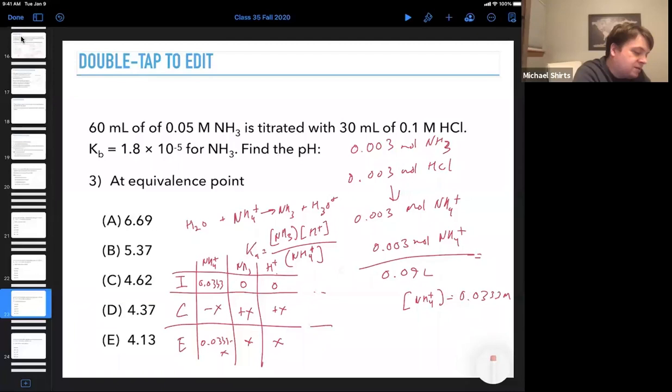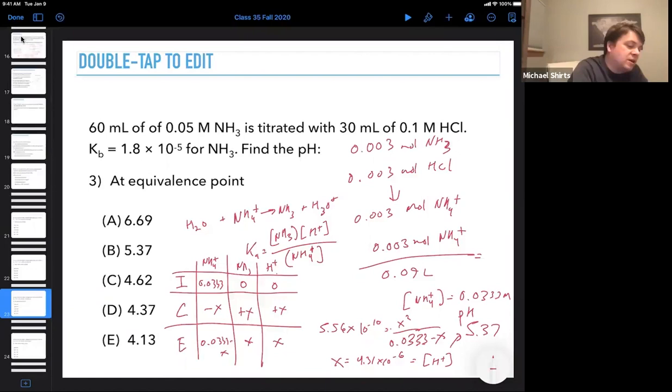Plugging everything in, 5.56 × 10⁻¹⁰ equals X² / (0.0333 - X). If we make the small X approximation, that leads to X = 4.31 × 10⁻⁶, and that's the concentration of H⁺, which leads to a pH of 5.37. As we'd expect, it's a weak base titrated with a strong acid, so we're going to have a pH that is somewhat acidic.